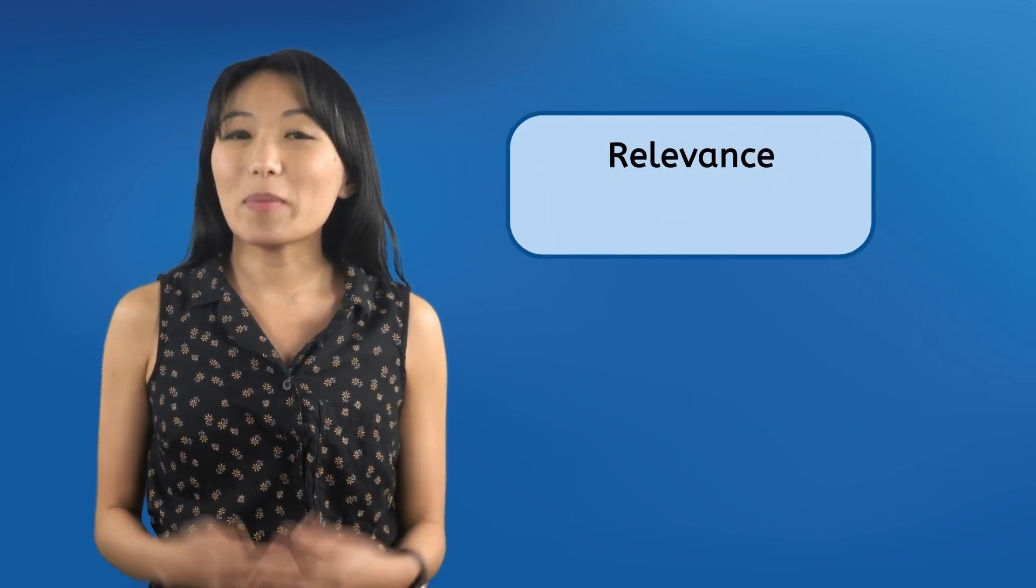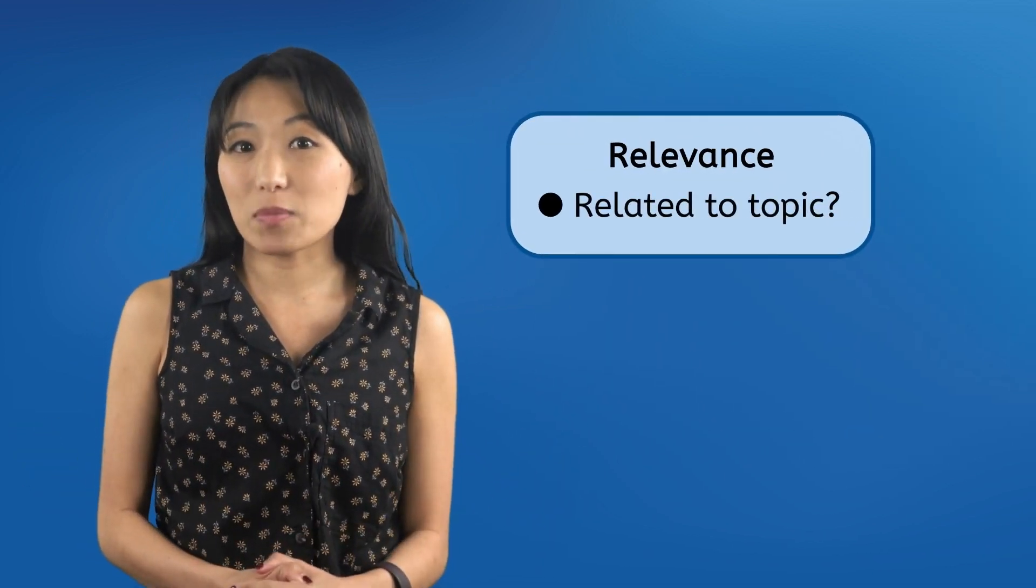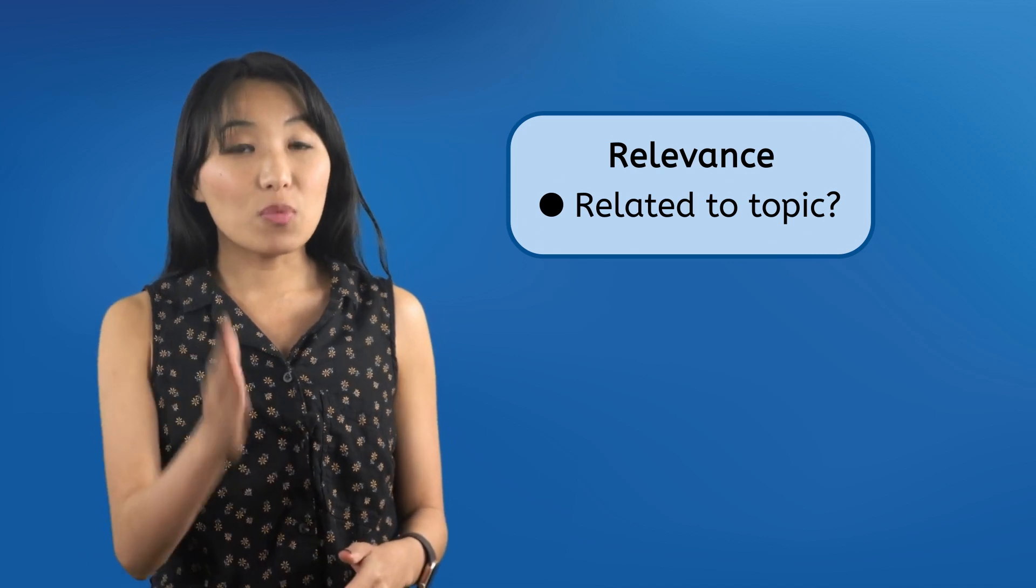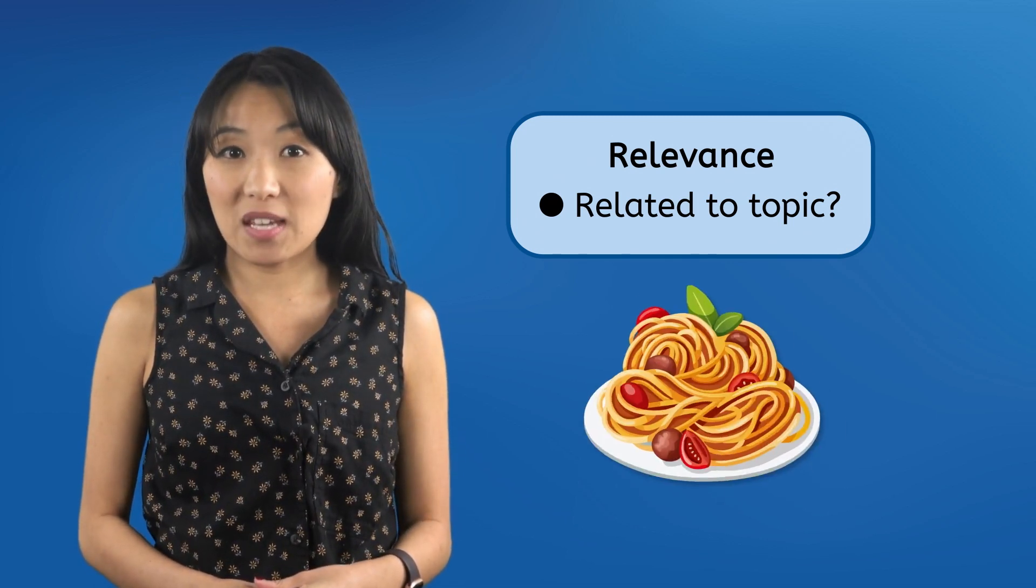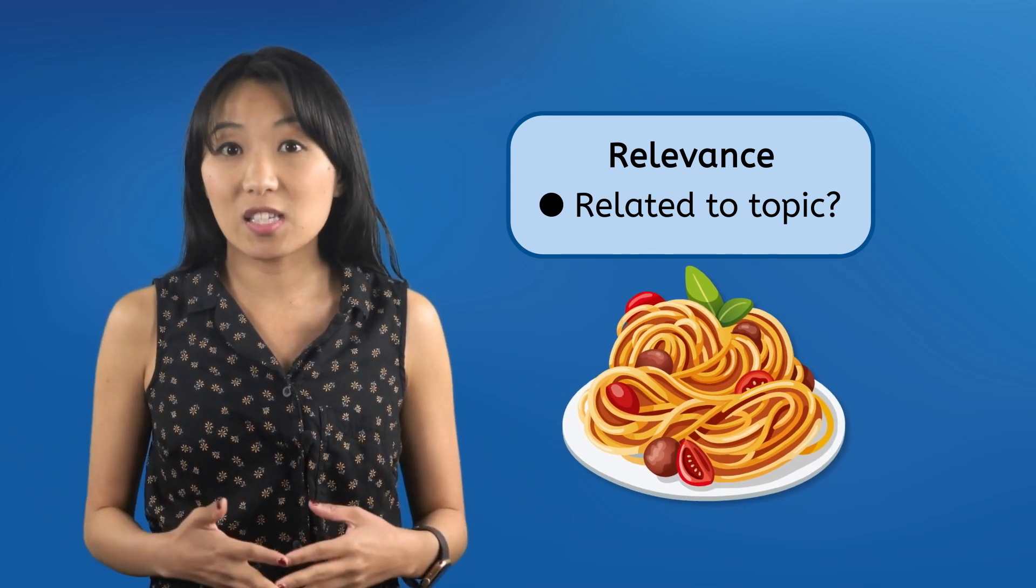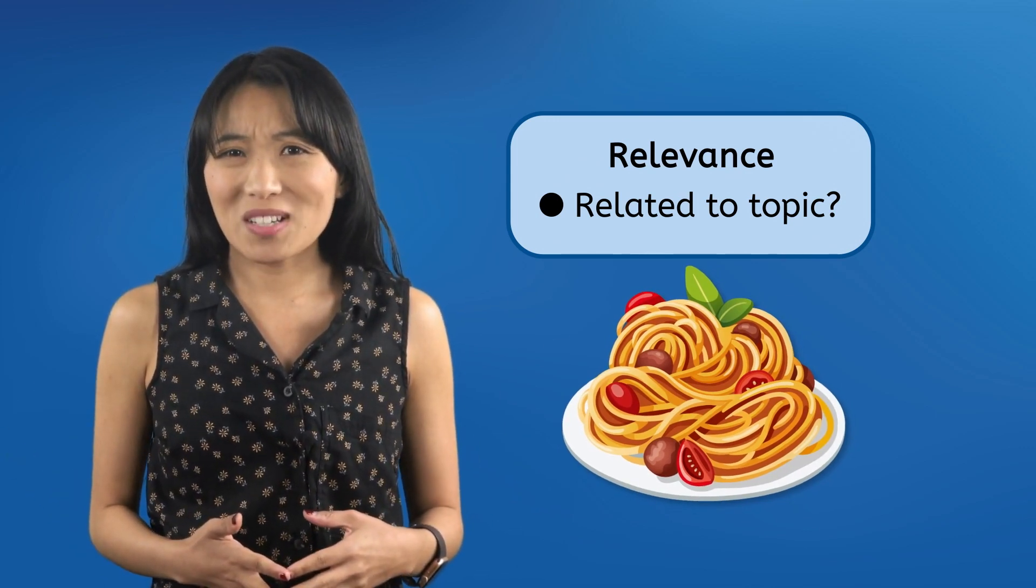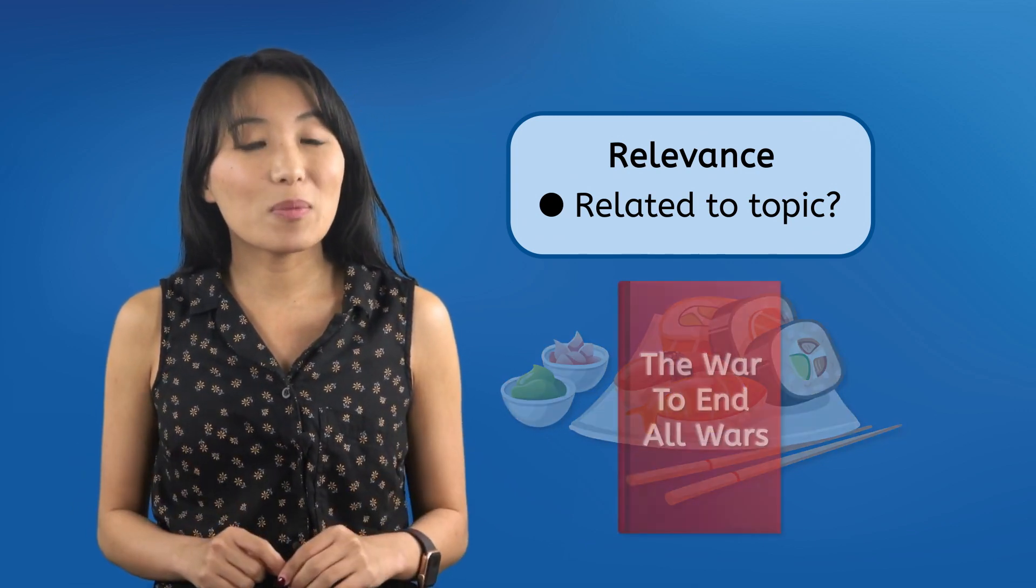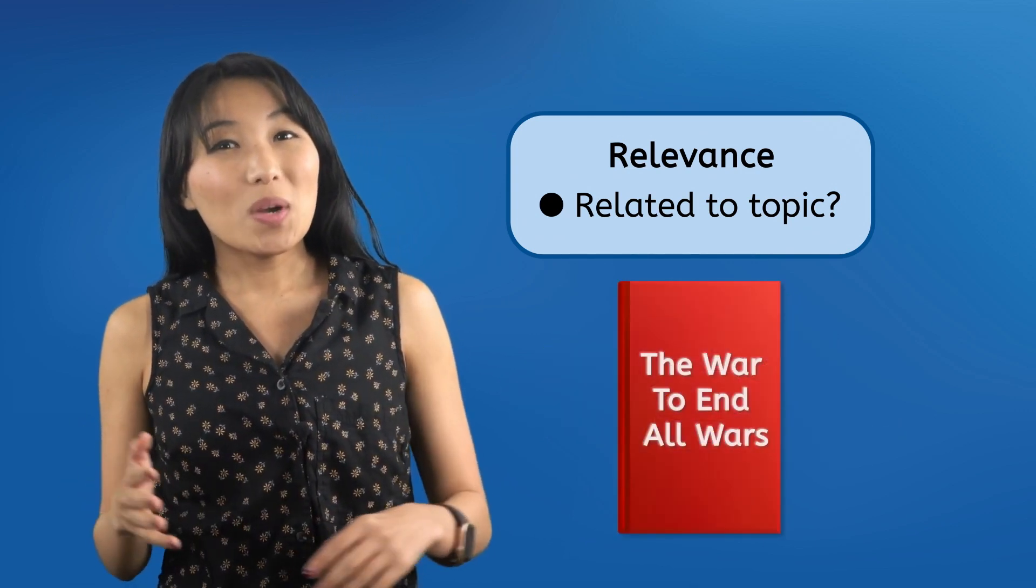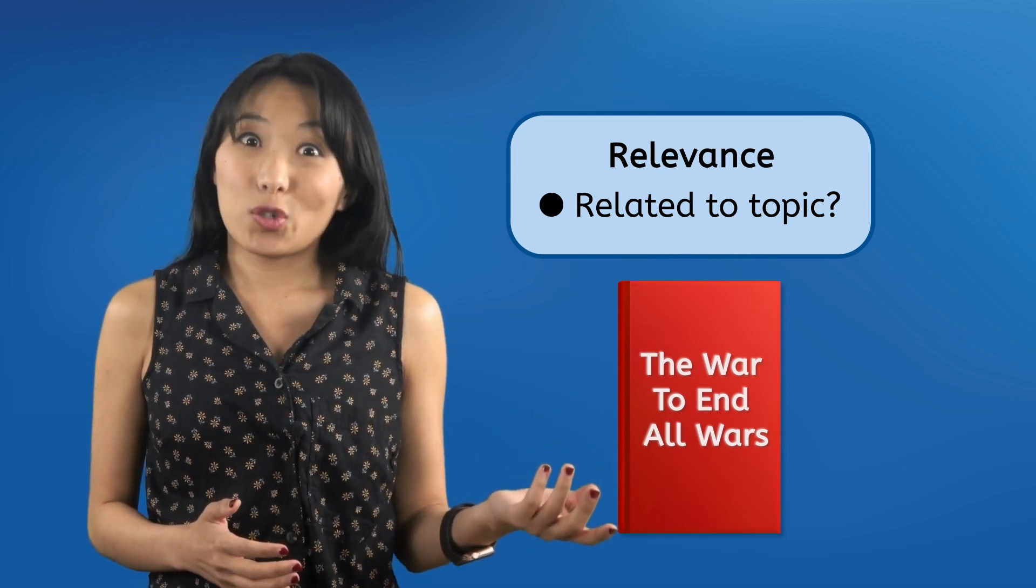The next test is all about relevance. How much does the information relate to the topic you actually want to learn about? A failure in relevance could be as obvious as finding a spaghetti recipe when you were trying to learn how to make sushi, or as subtle and easy to miss as reading a book about World War I when you meant to learn about World War II.